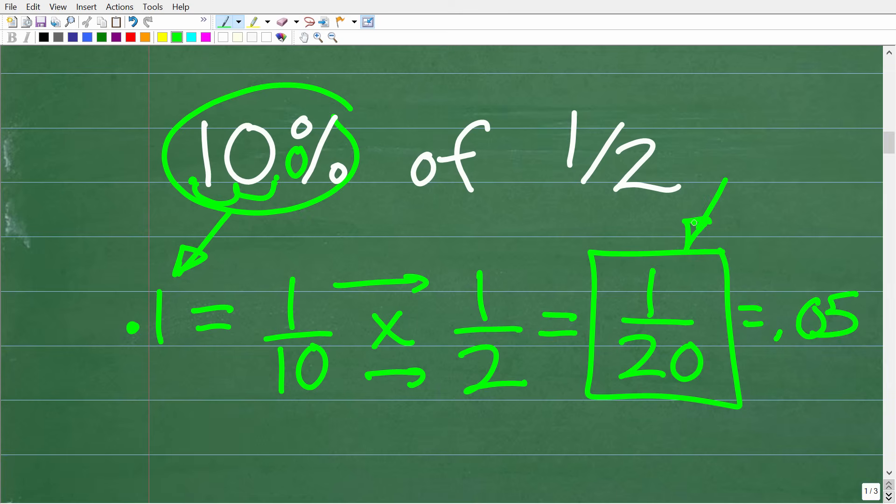This is the correct answer in fractional form. All right, so 0.05 is the same thing as 1 twentieth. So 10 percent of 1 half is 1 twentieth. Okay, now if you again want to express this fraction as a decimal, it would be 0.05. So these are the two correct answers.